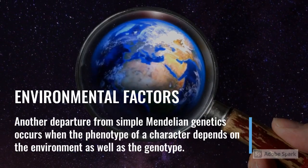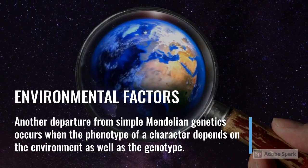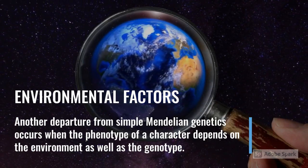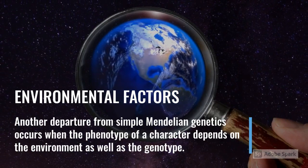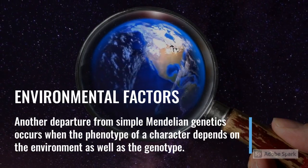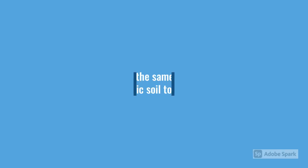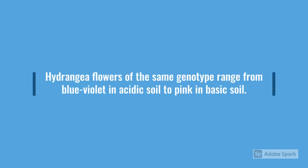Another departure from simple Mendelian genetics occurs when the phenotype of a character depends on the environment as well as the genotype. For example, the acidity and free aluminium content of the soil affect the color of hydrangea flowers, which range from pink in basic soil to blue-violet in acidic soil.